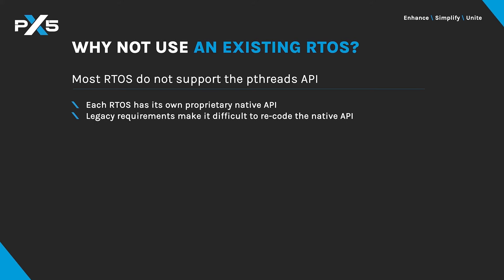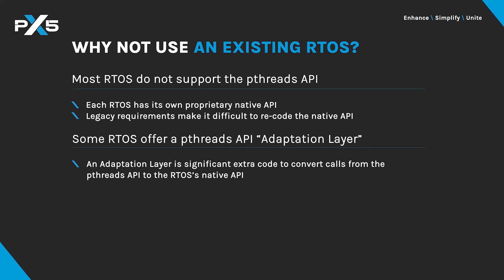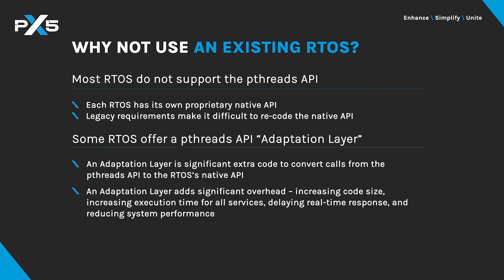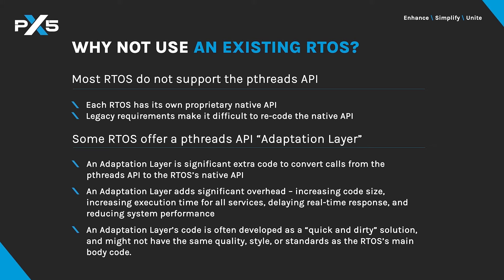Legacy and interoperability requirements rule out recoding the API. There is a way to adapt them for use with PThreads through an adaptation layer, which translates PThreads API calls into comparable native RTOS functions. However, this presents a few challenges. First, an adaptation layer involves significant additional code for each service call, adding overhead that slows performance and increases code size. Often such a layer is developed independently of the RTOS, with different coding style, quality, or standards, and the compatibility isn't quite exactly what PThreads implies.